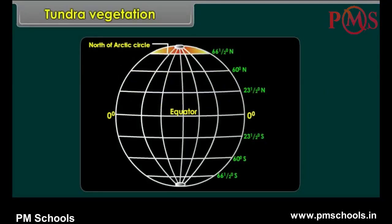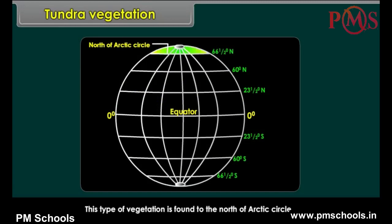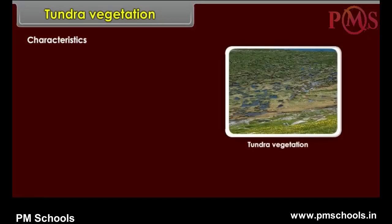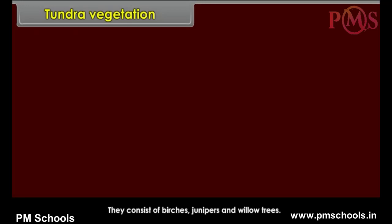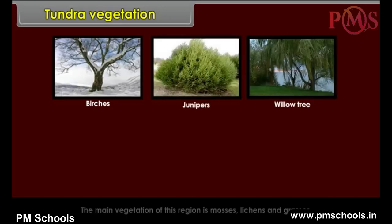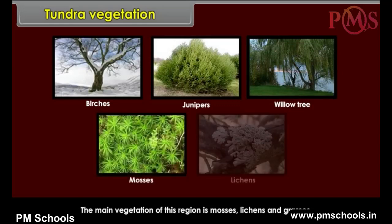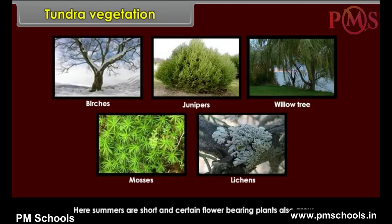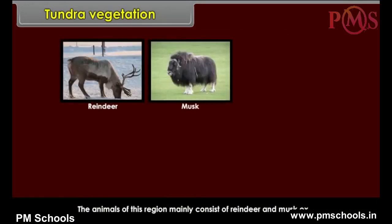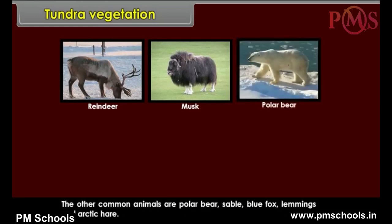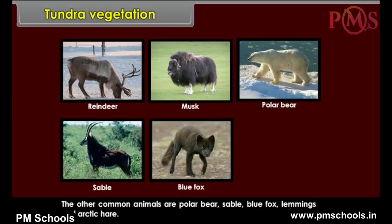Tundra Vegetation. This type of vegetation is found to the north of the Arctic Circle. Characteristics: Winters are very long and severe. The growth of plants is very restricted. Short saturated plants and trees grow adjoining the taiga forests. They consist of birches, junipers and willow trees. The main vegetation of this region is mosses, lichens and grasses. Summers are short and certain flower-bearing plants also grow. The animals of this region mainly consist of reindeer and musk ox. The other common animals are polar bear, sable, blue fox, lemmings and arctic hare.